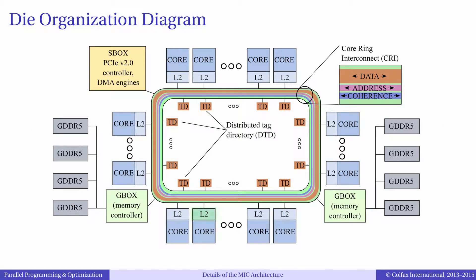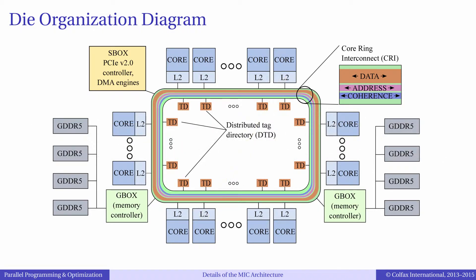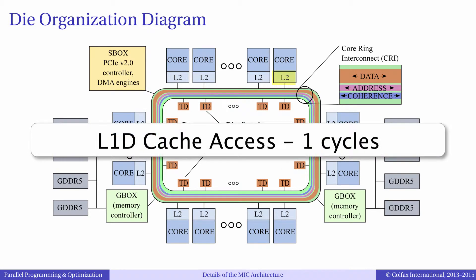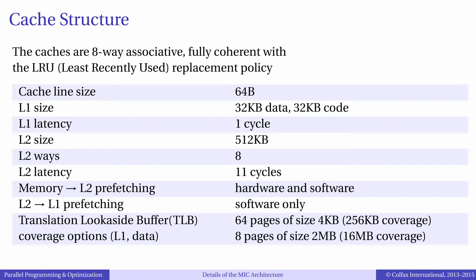The second case is if the cache line is in the cache of a neighboring core. In this case the core will refer to the tag directory to find out the location of the cache line and then request the cache line directly from the remote L2 cache. This operation is far less costly and only takes tens of cycles. The third and fourth cases are the best cache scenarios, which are when the data is in the local level 2 and level 1 caches. In this case the cache line can be obtained in about 10 cycles or one cycle from the level 2 and level 1 caches respectively. Therefore data locality is the key to reducing the latency overhead of accessing memory and improving performance, especially for programs with intensive memory traffic.